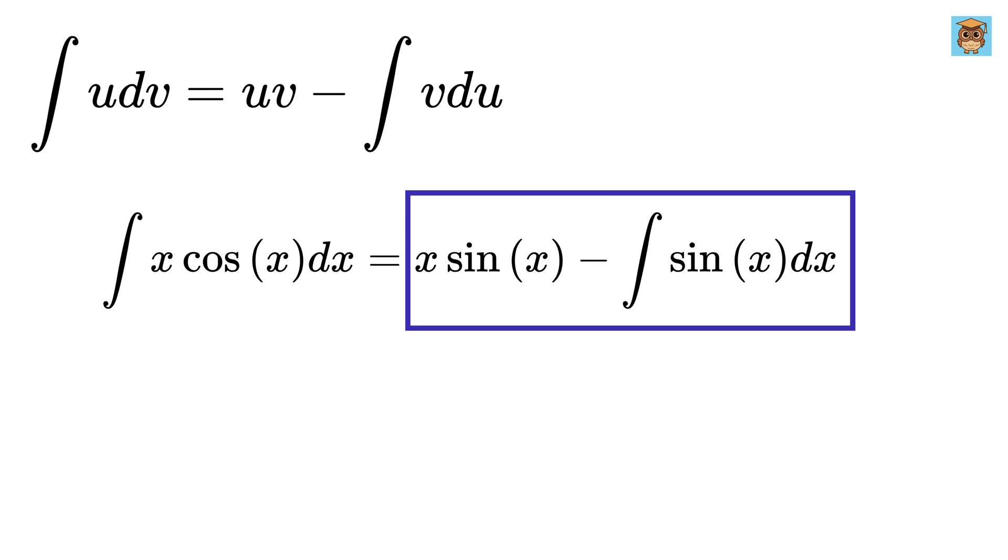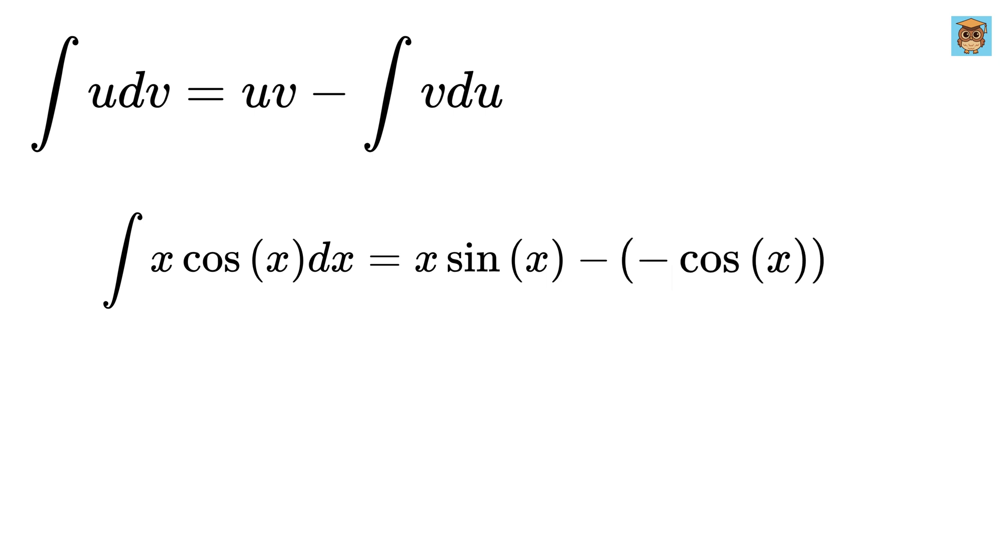All that is left now is to find this integral which is minus of cosine x and both these minus will make it plus. Do not forget to put the constant plus c.